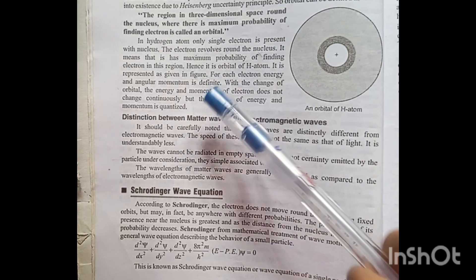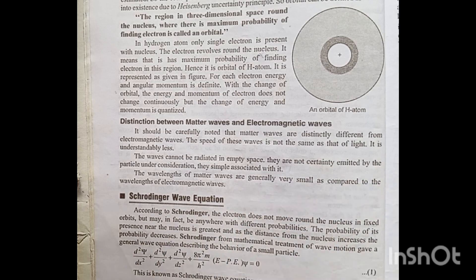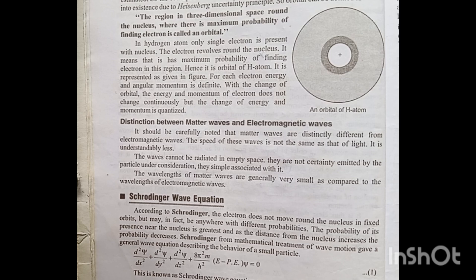In the hydrogen atom, only a single electron is present. The electron revolves around the nucleus, meaning there is a maximum probability of finding the electron in a certain region. Hence, that region is the orbital of the H atom — the hydrogen atom's orbital — which is represented as shown in the figure.